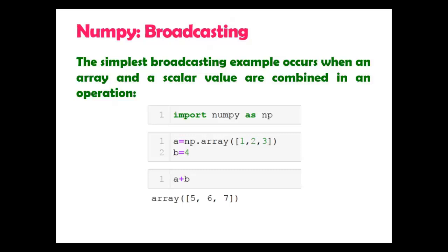The simplest broadcasting example occurs when an array and a scalar value are combined in an operation. Now here you can see I have created 1D array with three elements 1, 2 and 3. Here B is scalar with value 4. In NumPy, this scalar will broadcast to 1D array like this.